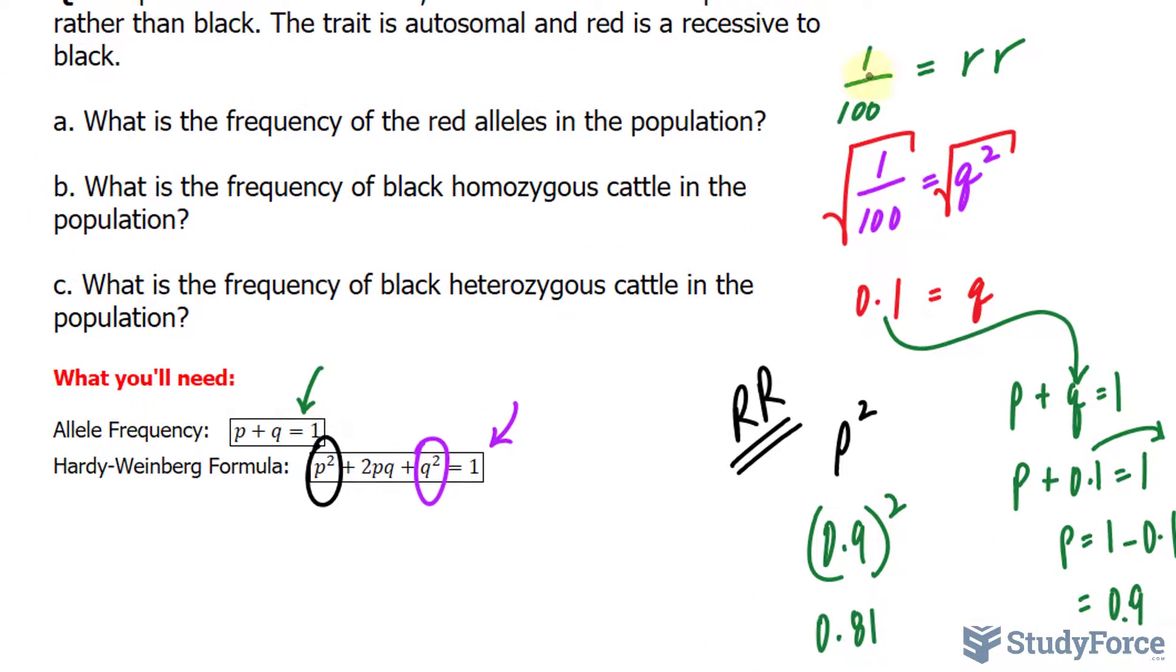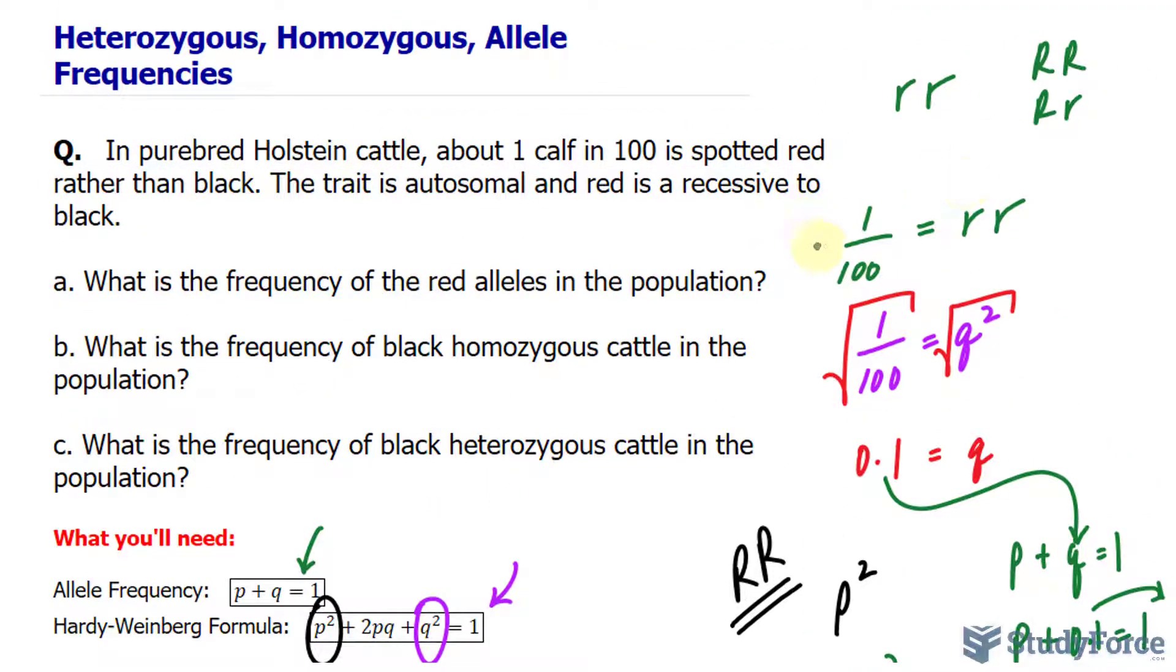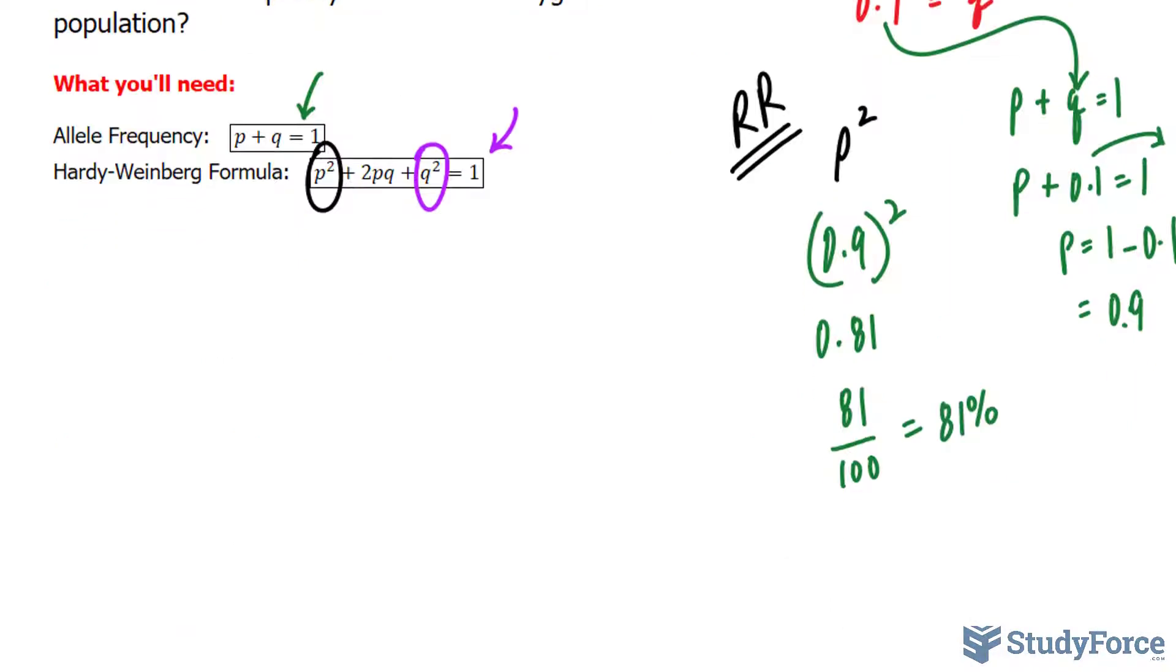All right, so 1% is little r, little r. 81% is capital R, capital R.